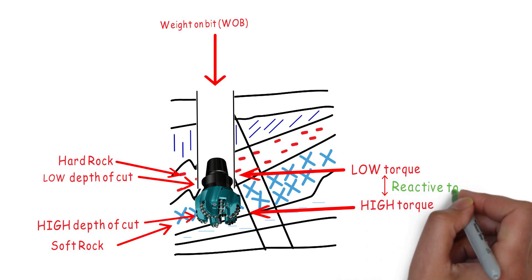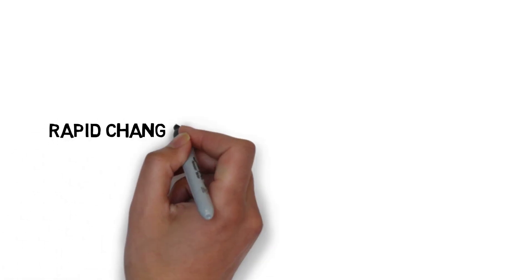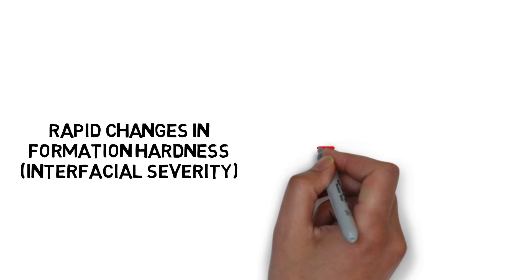When formation goes unpredictably back and forth between soft and hard many times very rapidly, we often call it transitional or ratty. These zones are often drilled without the benefit of being able to change drilling parameters or tools fast enough to keep up with the formation changes.